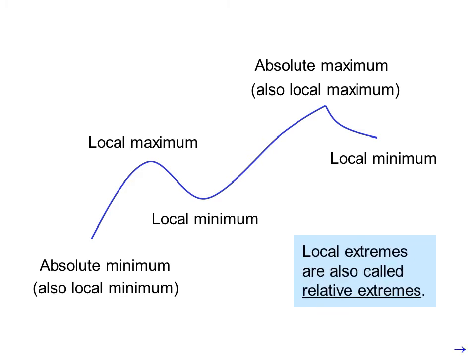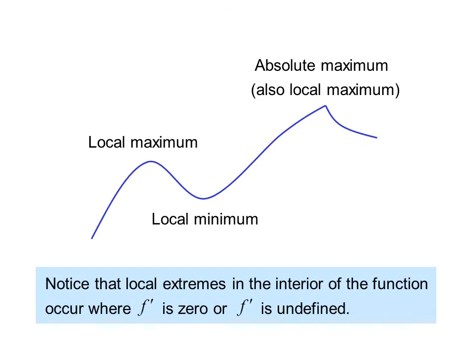Local extremes are also called relative extremes. Notice that local extremes in the interior of the function occur where f prime is zero — for example at certain interior points — or where f prime is undefined, such as at a sharp corner. At those flat points, f prime equals zero and the slope is zero.